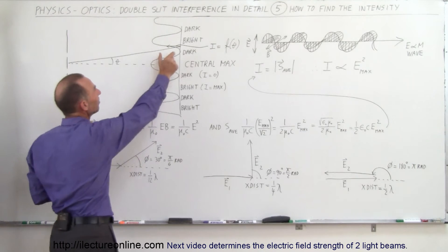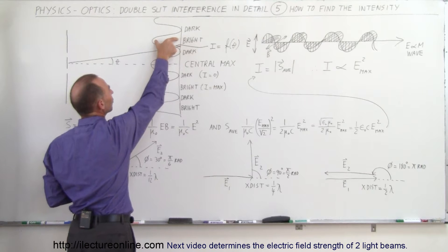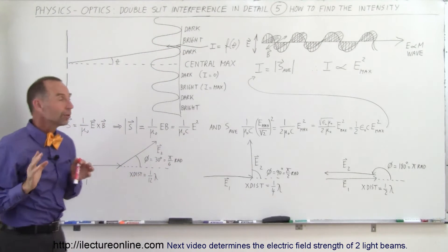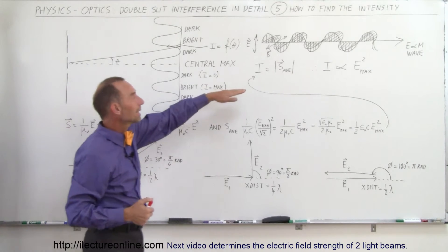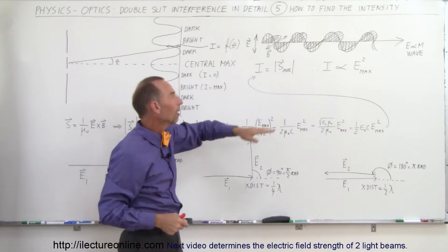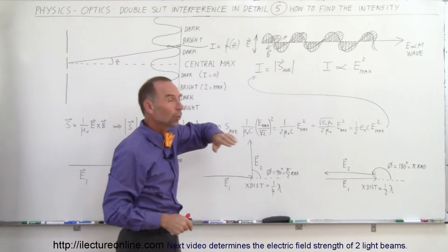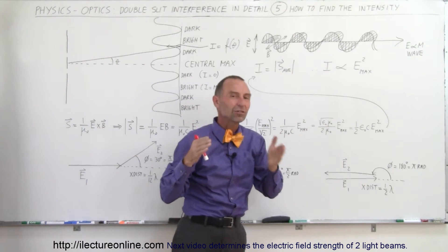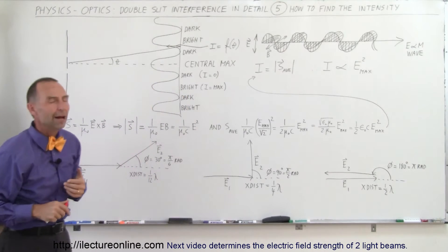But how do you find the intensity somewhere between full constructive and full destructive interference? It turns out the intensity is actually equal to the magnitude of what we call the Poynting vector. In other words, the intensity is proportional to the electric field strength of the electromagnetic wave at any point in time.